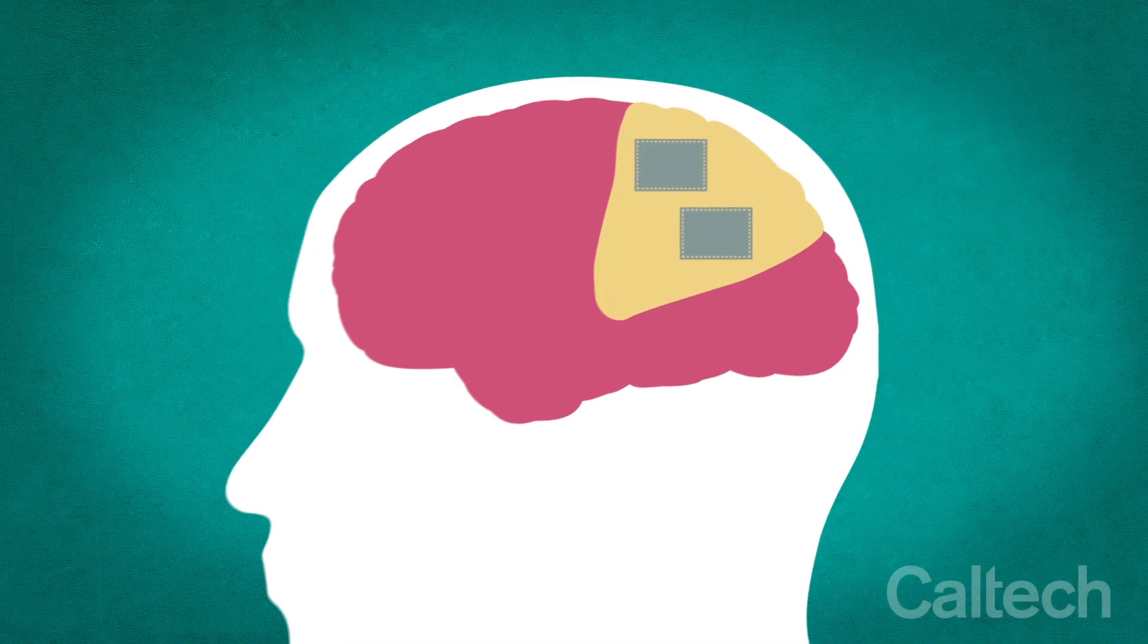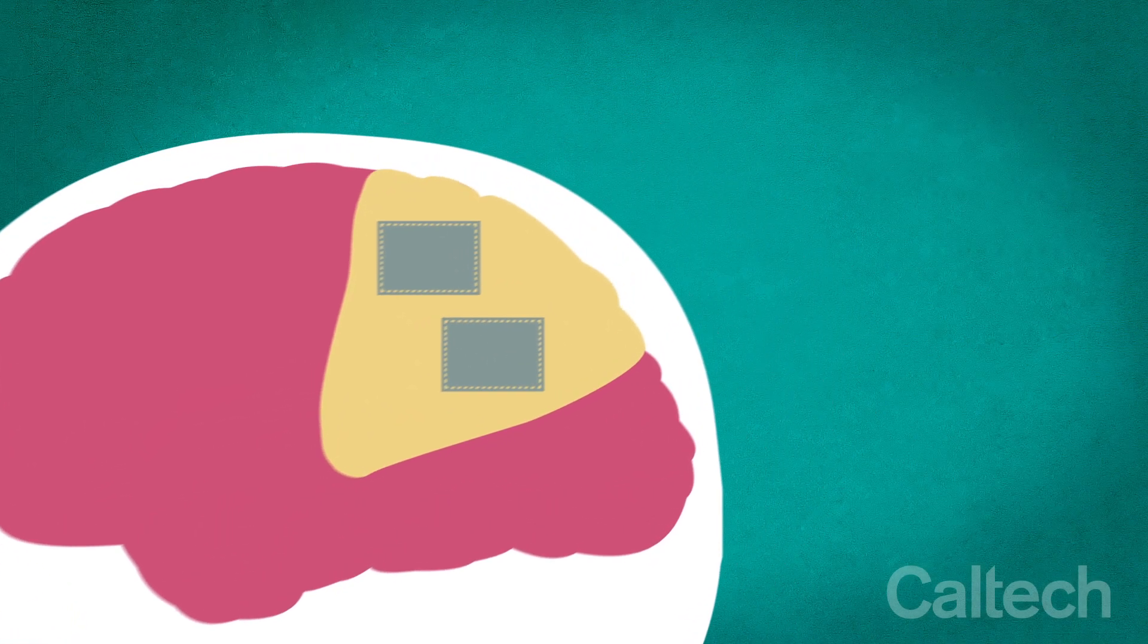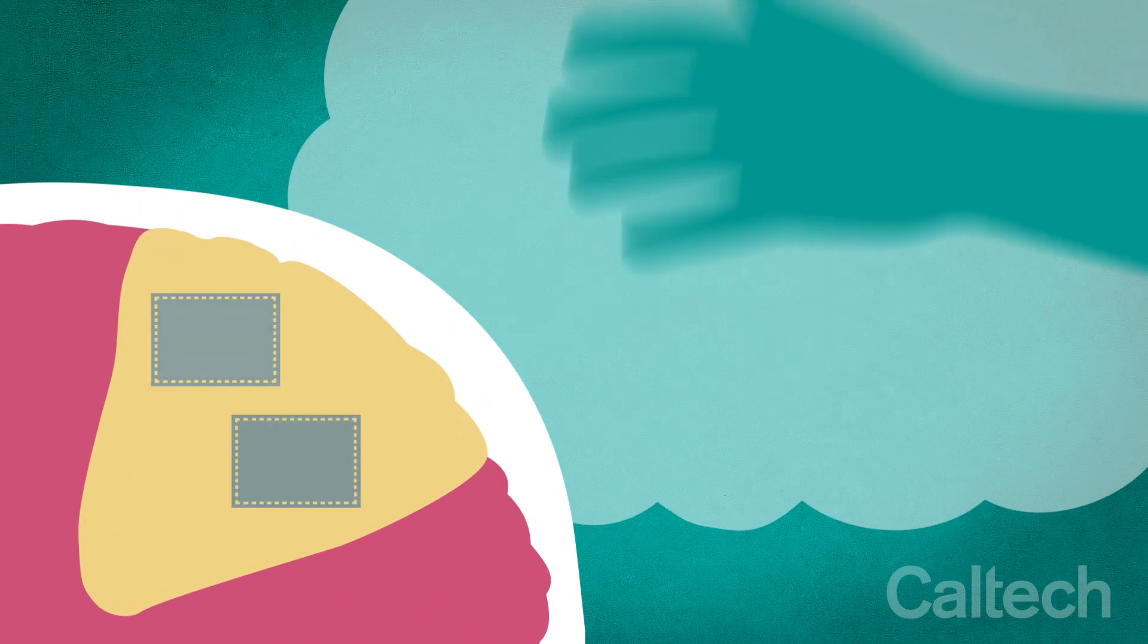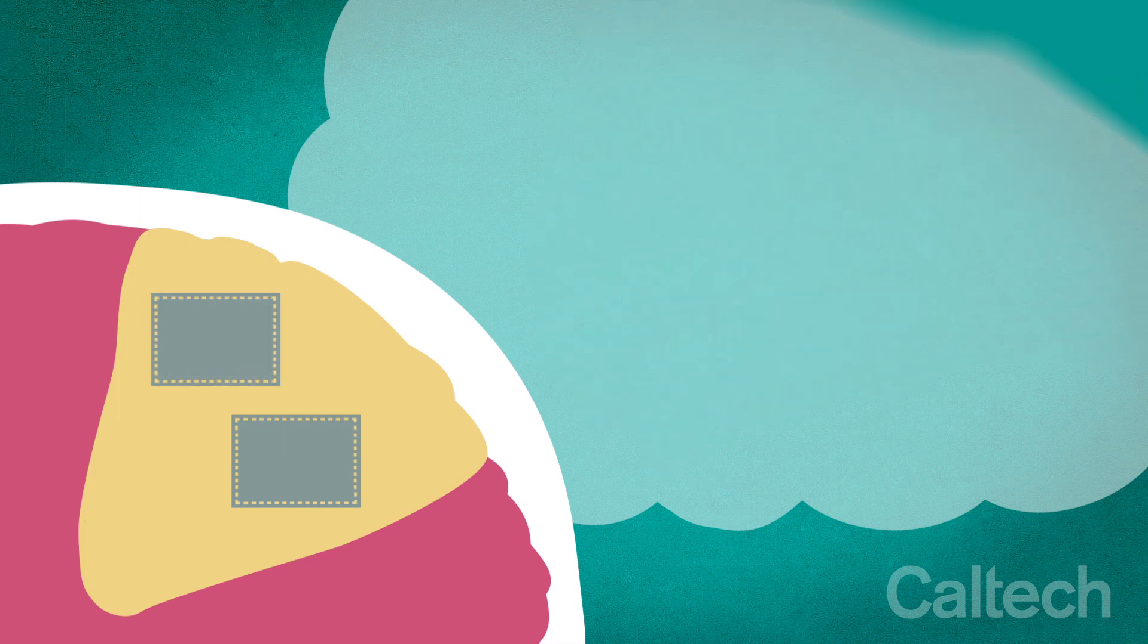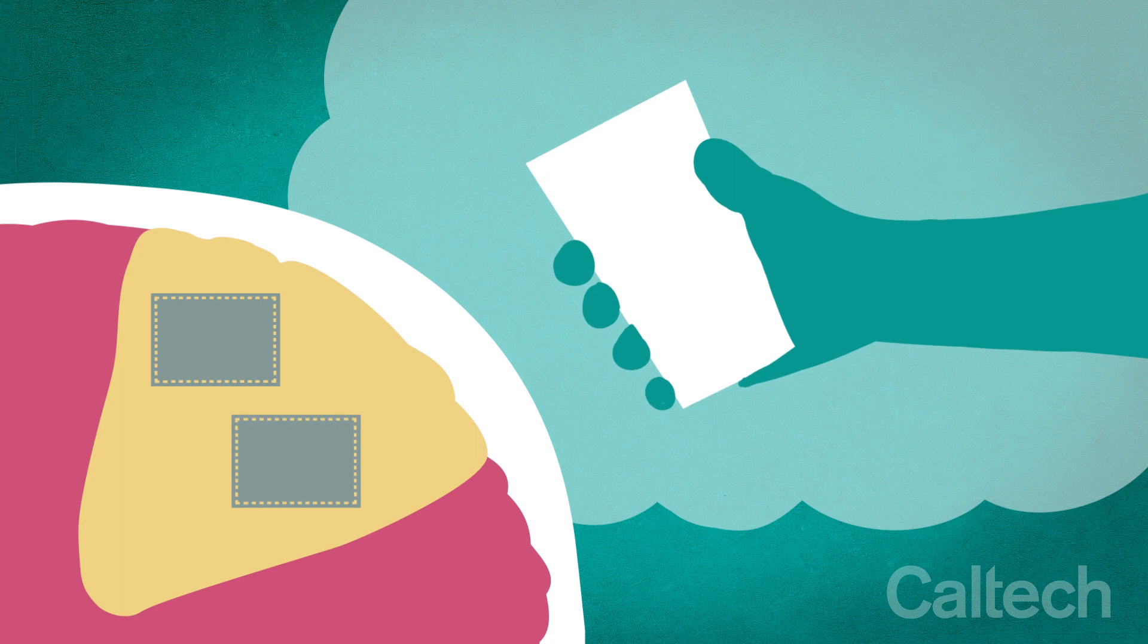Incredibly, the researchers also discovered that the patient can control activity of single brain cells through imagining specific actions. If he imagined a particular kind of movement, then he could easily control the cell.